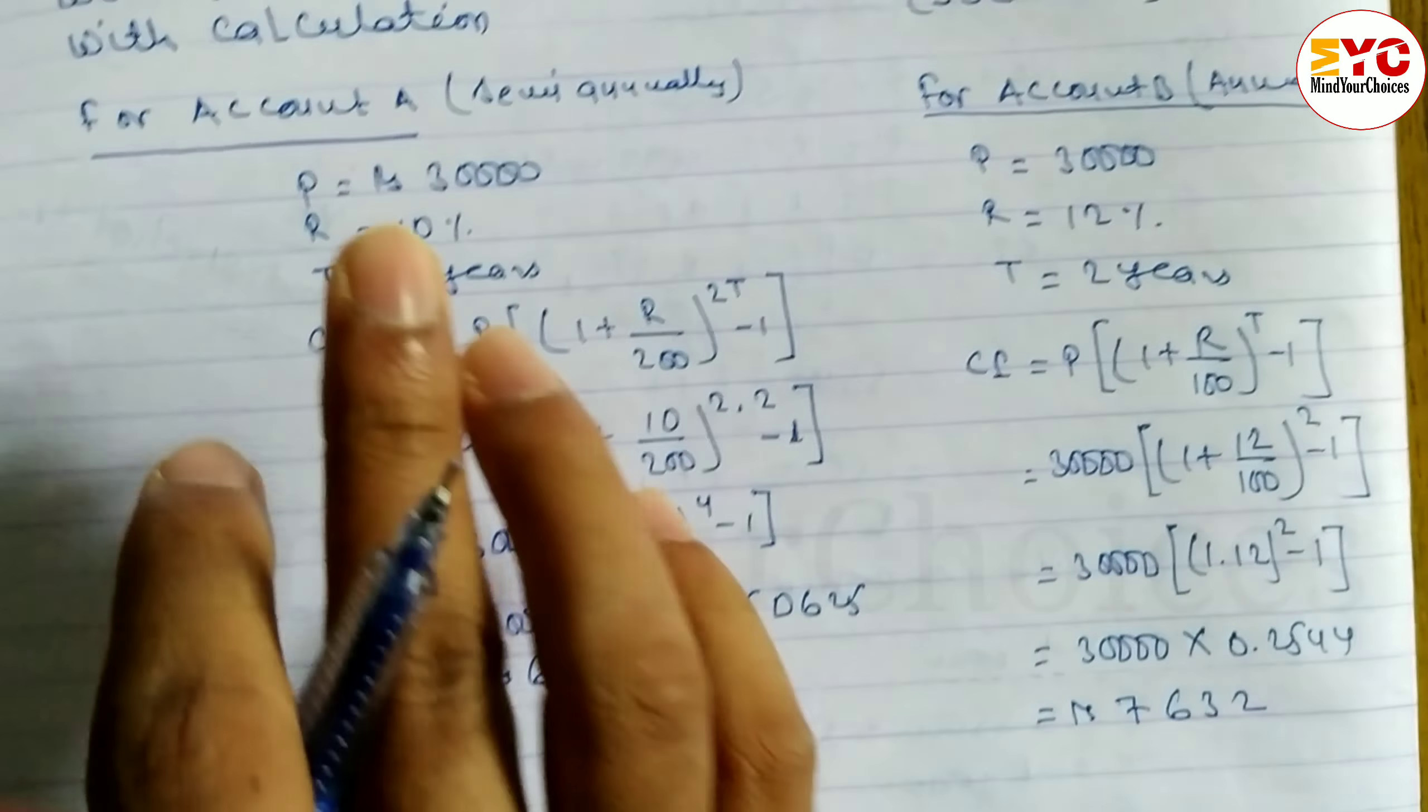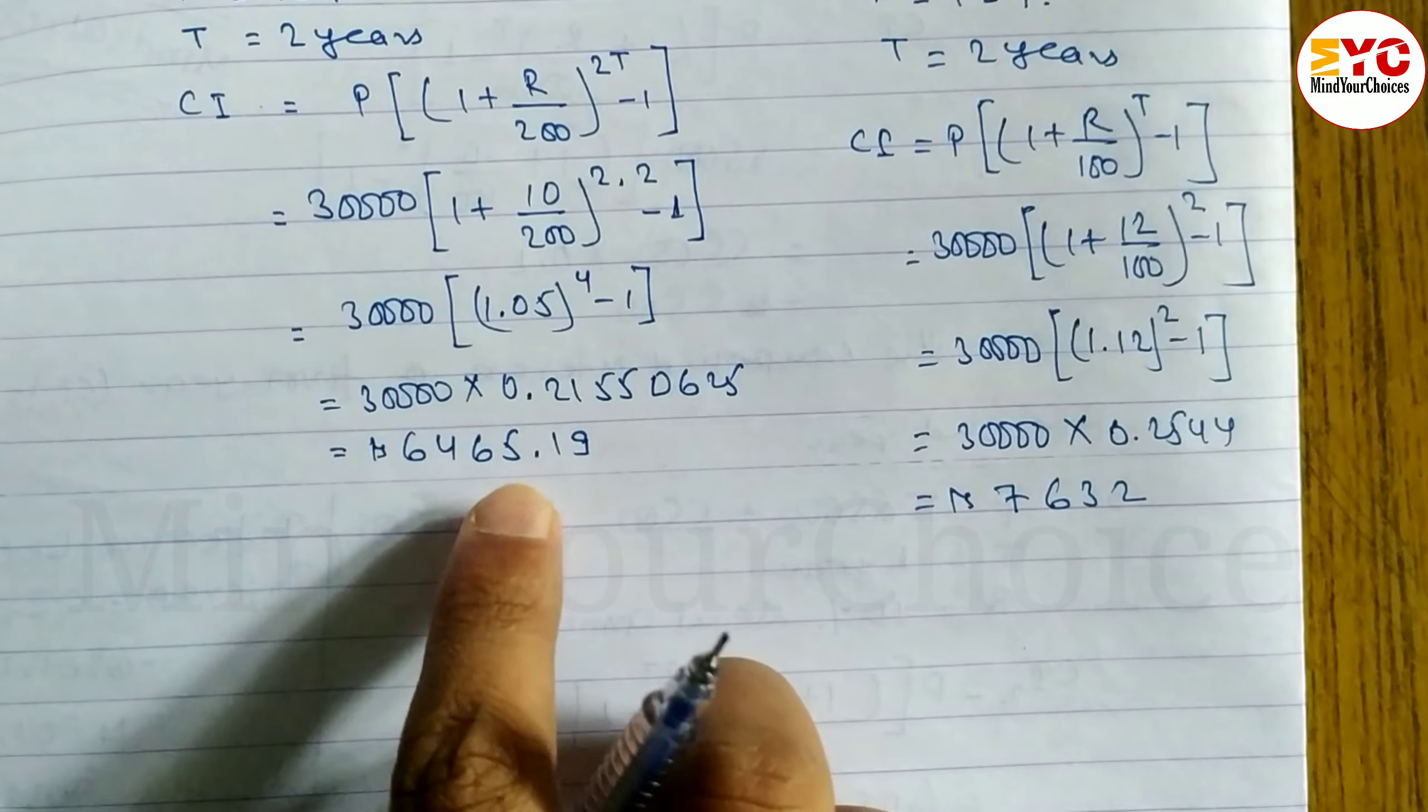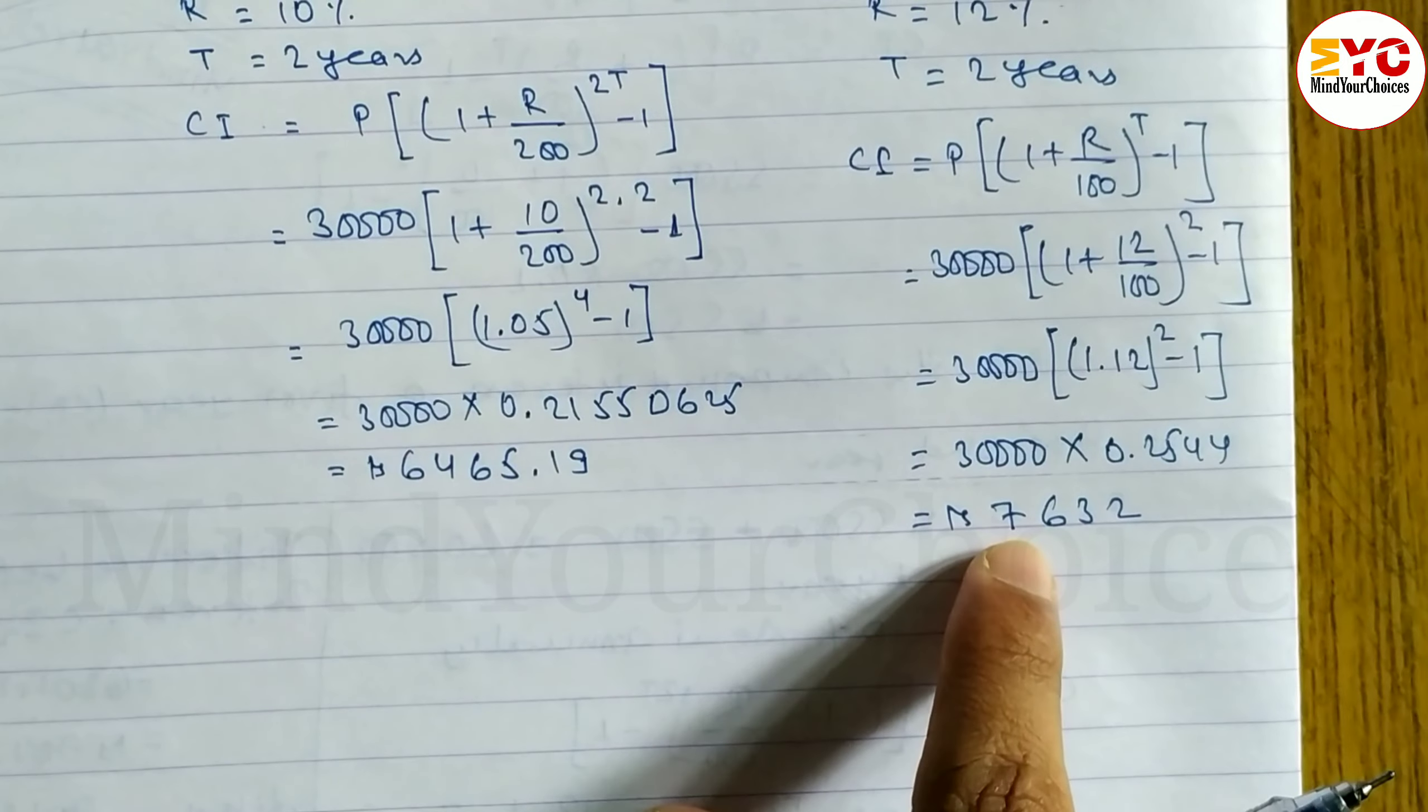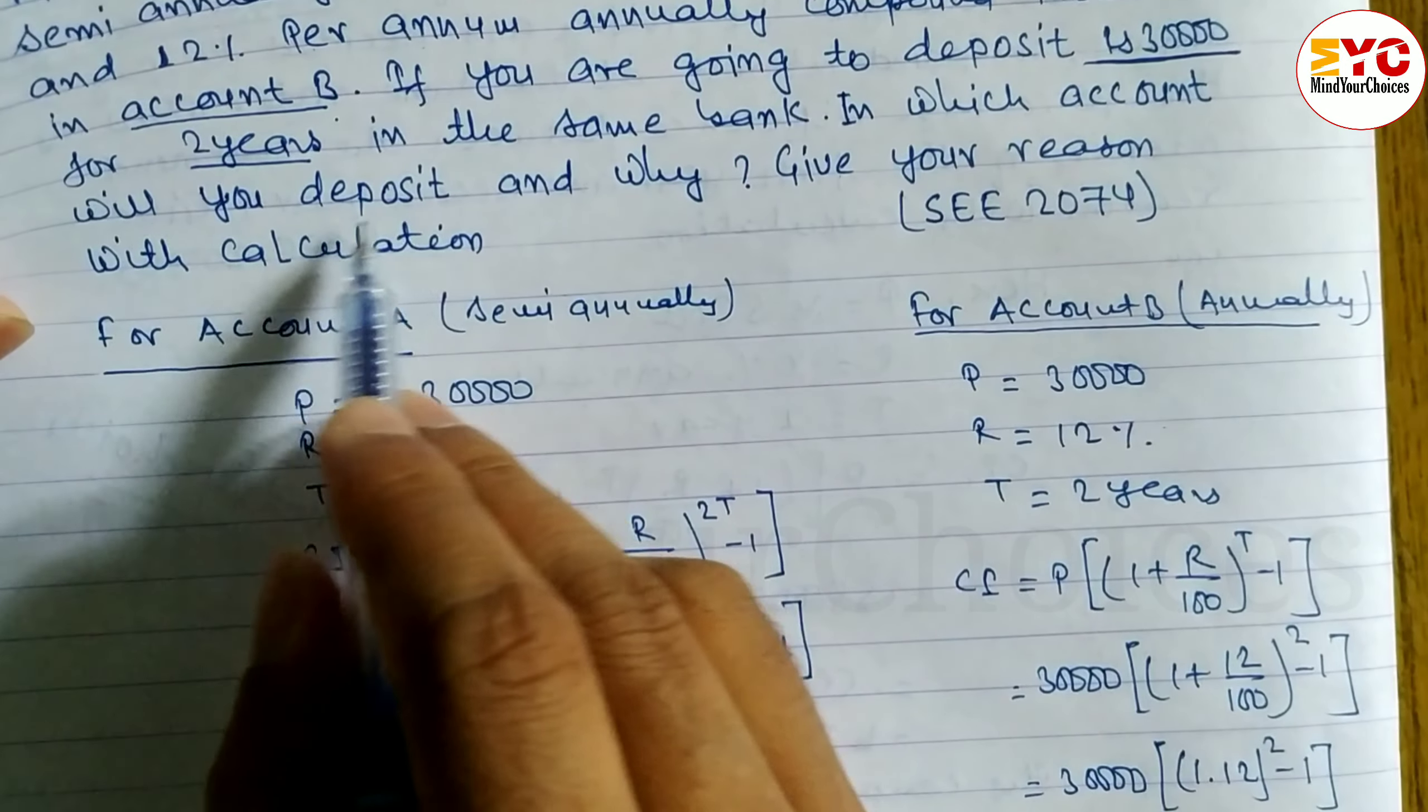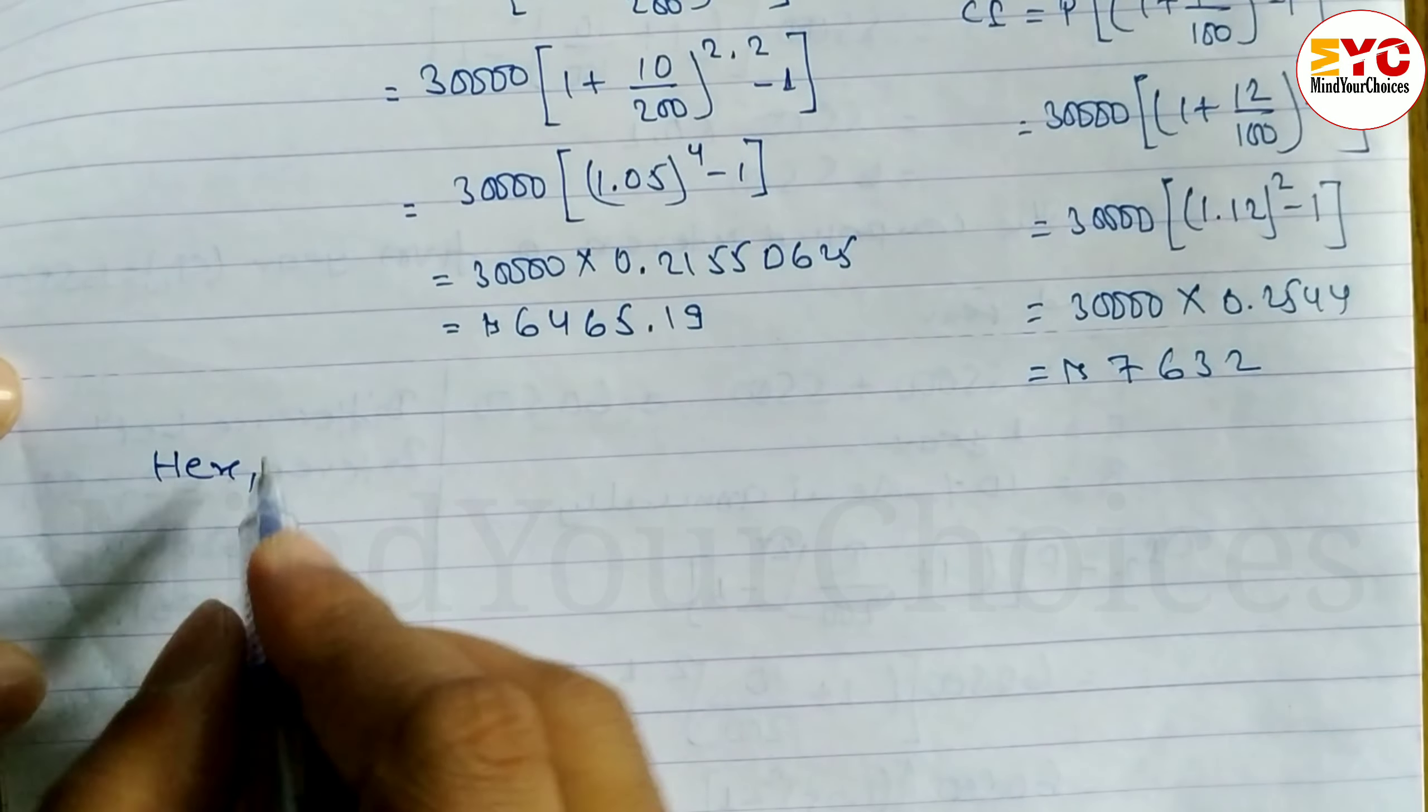So which one to choose, account A or account B? Definitely account B, because account B provides more interest than account A. Account A gives 6,465 rupees. Account B gives 7,632 rupees interest.